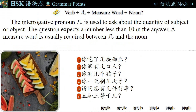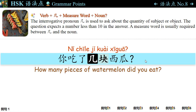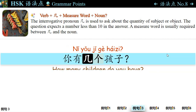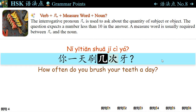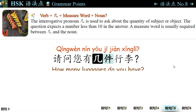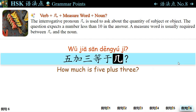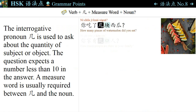语法点八: The interrogative pronoun 几 is used to ask about the quantity of subject or object. The question expects a number less than 10 in the answer. For example: 你吃了几块西瓜? — How many pieces of watermelon did you eat? 你家有几口人? — 口 is a measure word. 你有几个孩子? — How many children do you have? — 我有两个儿子, I have two sons. 你一天刷几次牙? — How often do you brush your teeth a day? 请问您有几件行李? — How many luggages do you have? 五加三等于几? — How much is 5 plus 3? The pattern is: Verb + 几 + Measure Word + Noun.